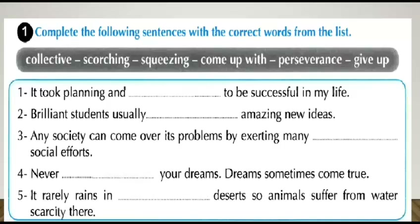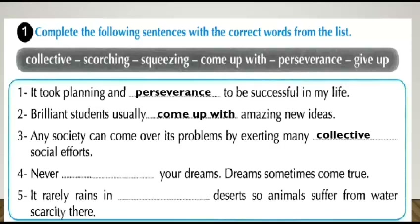Number one: 'It took planning and perseverance to be successful in my life.' That's right — perseverance. Number two: 'Brilliant students usually come up with amazing new ideas.' Number three: 'Any society can overcome its problems by exerting collective social efforts.' Number four: 'Never give up your dreams — dreams sometimes come true.' Number five: 'It rarely rains in scorching deserts, so animals suffer from water scarcity there.' That's right — scorching.